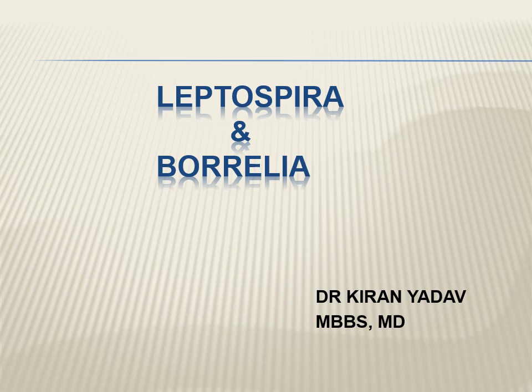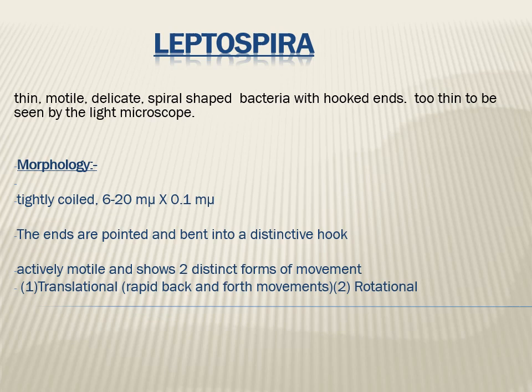Leptospira belongs to the family Spirochaetaceae. These spirochetes are spiral in shape — that is why they belong to this family. They are very thin and flexible. Leptospira also has hooked ends, but because they are very thin, we cannot see these bacteria with normal microscopes. We need a special microscope for bacteria belonging to this family.